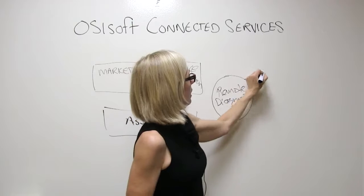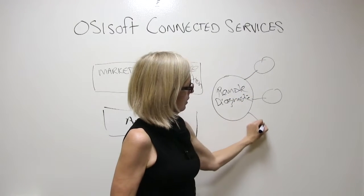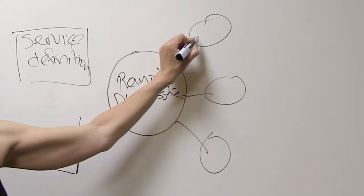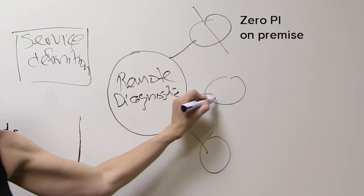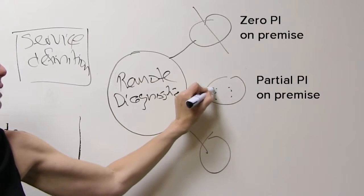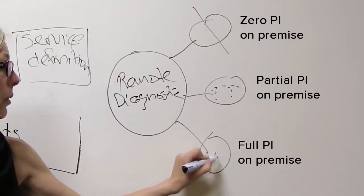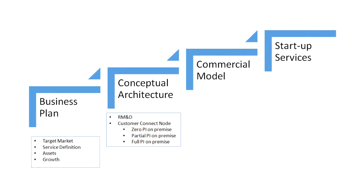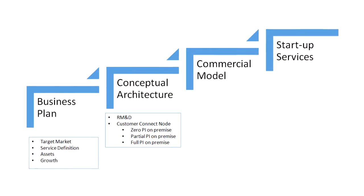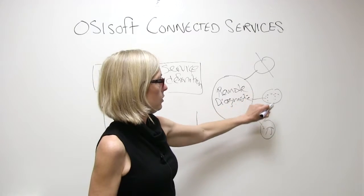We recognize that our service providers will have many customers. Some customers will have zero PI on premise, some will have partial PI on premise, and some customers will already be using PI throughout their organization. The next thing we have to do is develop a conceptual architecture for you, the service provider, to collect data from all of these customers.